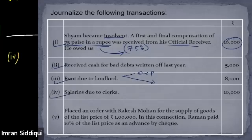Fourth transaction: salary due to clerks. This is similar to the previous one. Vanisha answers: salary account debit to outstanding salary account. Correct. Salary account debit to outstanding salary account, 10,000.